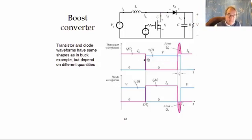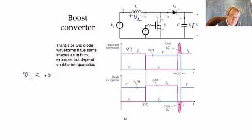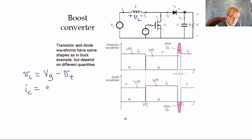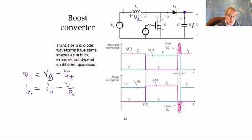Given these transistor and diode waveforms, the first step is to relate the inductor voltage and capacitor current waveforms to these waveforms. The inductor voltage V_L is equal to the input voltage Vg minus the transistor voltage V_T. Likewise, for capacitor current, the node equation gives us that the capacitor current equals the diode current I_D minus the load current V over R. We then find the average values and apply volt-second balance and charge balance, accounting for the effect of diode reverse recovery.